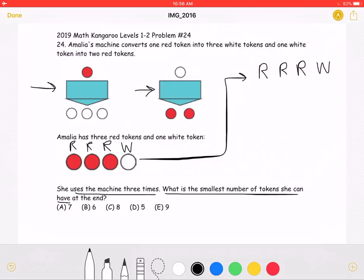As we can see in this conversion, she ends up with two tokens, while here she ends up with three tokens after putting a token in. Therefore, we want to use this conversion as much as possible because we want to have the smallest number of tokens possible.